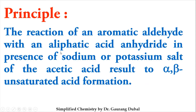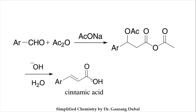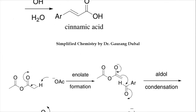The reaction will result in the aromatic aldehyde forming alpha-beta unsaturated acid. The aldehyde and acetic anhydride react with each other in sodium acetate — it will result in an intermediate, and the intermediate gets hydrolyzed and finally gets converted into cinnamic acid. The position near to the carboxylic group is the alpha position and the next position is the beta position, so alpha-beta unsaturated acids can be formed by the Perkin reaction.